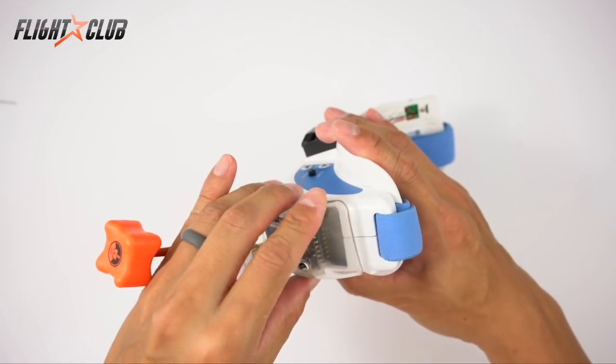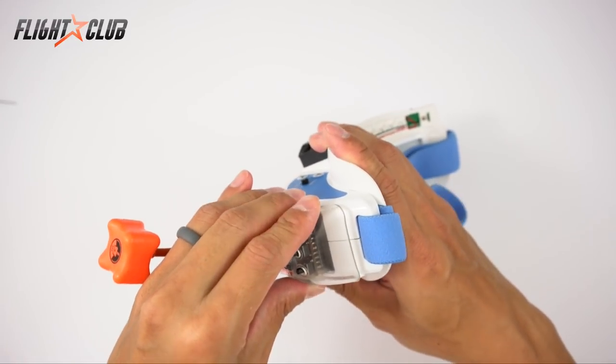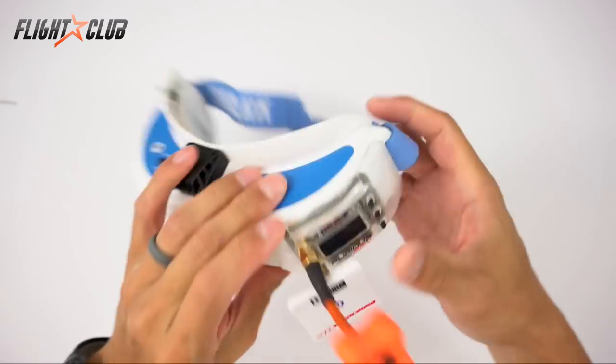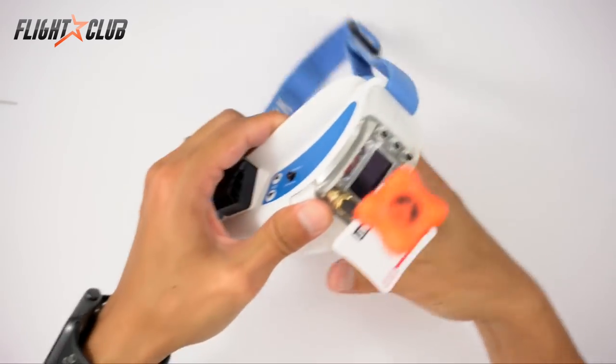So I'm just going to use my Furious TrueD diversity module. Just click it in place. Make sure it's seated well.